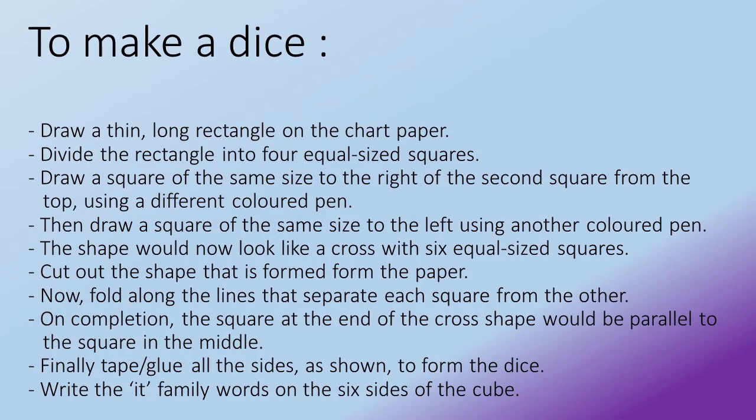On completion, the square at the end of the cross shape would be parallel to the square in the middle. Finally, tape or glue all the sides to form the dice. Write the it family words on the six sides of the cube.